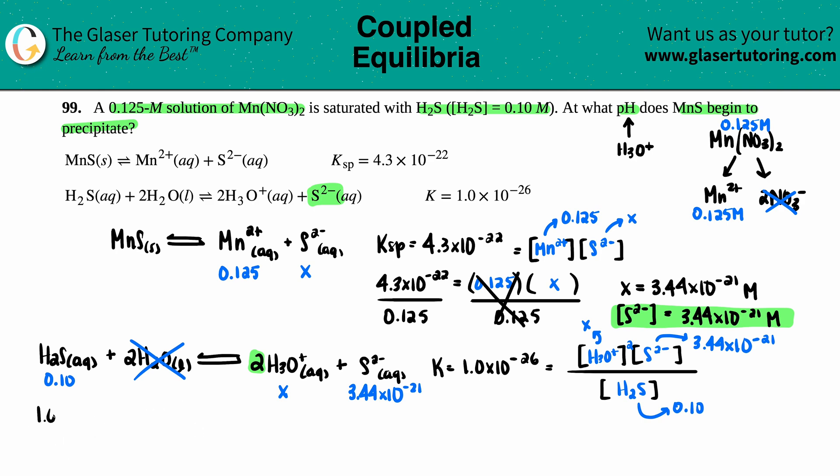I'm going to start over here. So 1.0 times 10 to the negative 26th equals X squared times 3.44 times 10 to the negative 21 divided by 0.10.